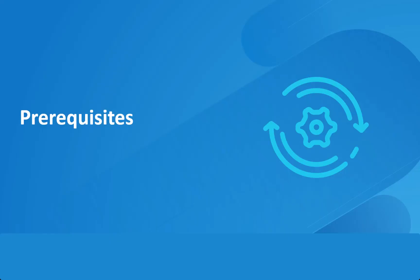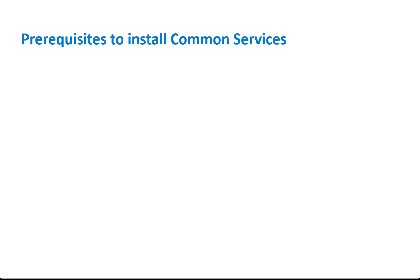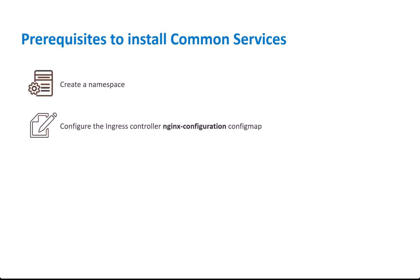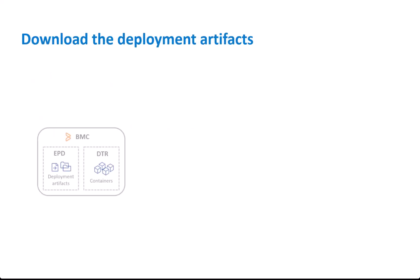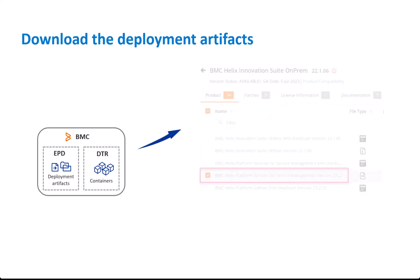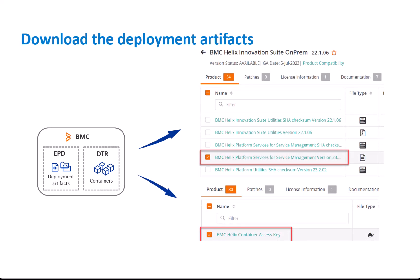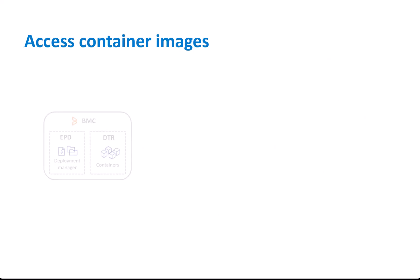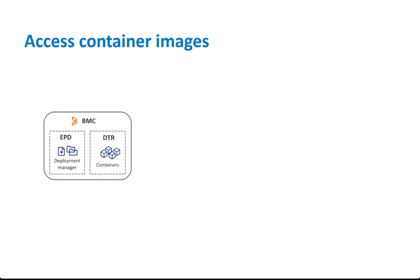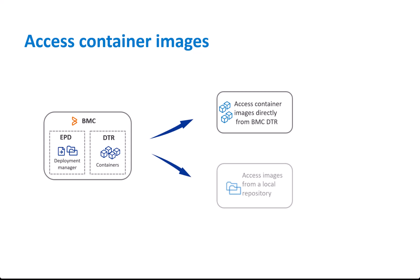Next, we'll see the prerequisites to install these services. Create a separate namespace to install the services. In your Kubernetes cluster, change the ingress controller config map name to use the config map in your environment. Download the deployment manager from the BMC Electronic Product Distribution site. Download the token to access the container images located at BMC Trusted Registry. The deployment manager can access the images directly from BMC DTR, or you can set a local Harbor repository to pull the images.